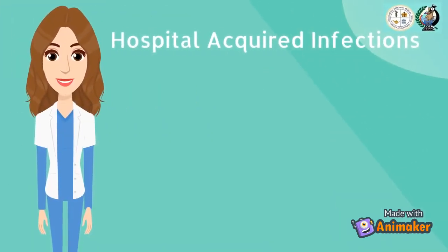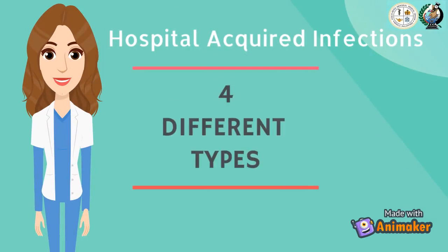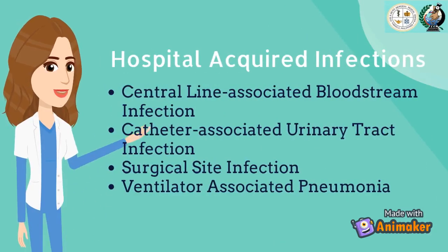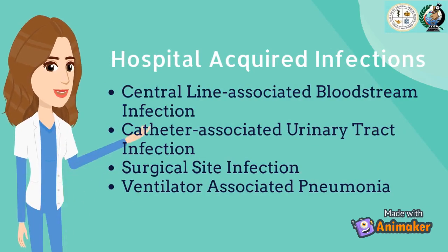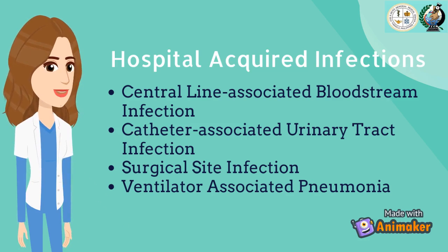Let's talk about hospital-acquired infections, and we have four different types. First is the central line-associated bloodstream infection, or CLABSI. Second is the catheter-associated urinary tract infection or CAUTI. Third is the surgical site infection or SSI. And lastly, the ventilator-associated pneumonia or VAP.